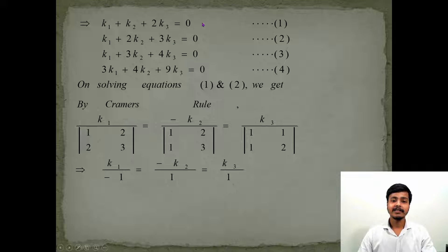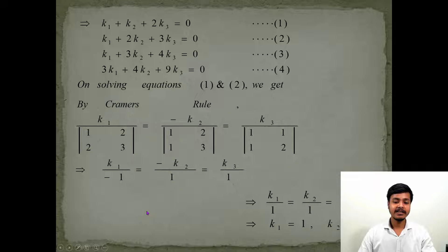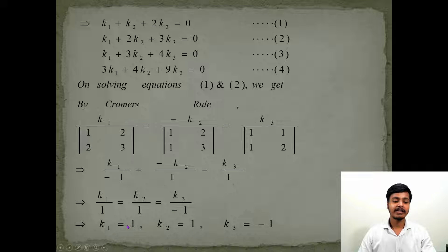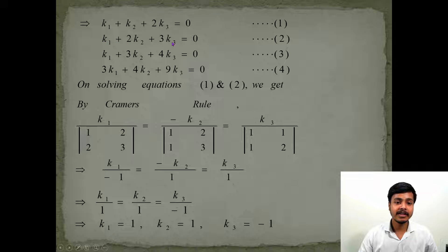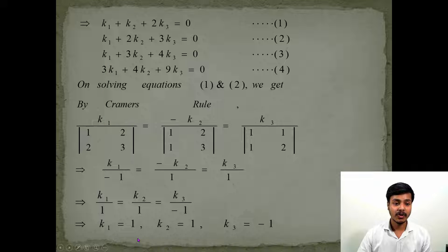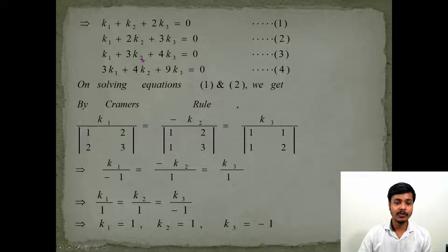Applying Cramer's rule using equations 1 and 2, we get values of k1, k2, k3. The next important step is to check whether these values satisfy equations 3 and 4. For equation 3: 1×k1 + 3×k2 + 4×k3 gives 1 + 3 - 4 = 0. So these values satisfy equation 3.